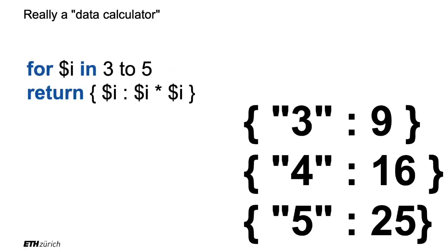This is a FOR clause — a bit like SELECT FROM WHERE in SQL, and also a bit like a for loop in Python or Java, but this is a declarative for loop, not an imperative one. For every item between 3 and 5, it binds it to variable $i. Then for every value of $i — first 3, then 4, then 5 — it gives you a JSON object where $i is the key (converted to a string since numbers can't be JSON keys), associated with $i times $i — the square. So 3→9, 4→16, 5→25.